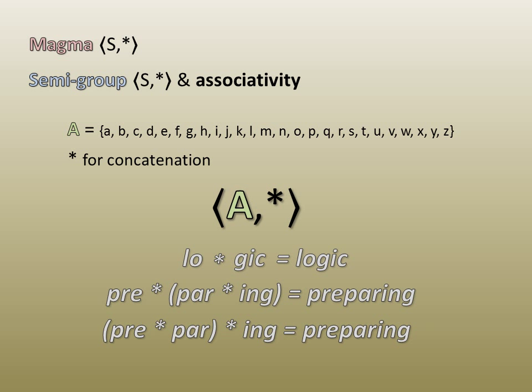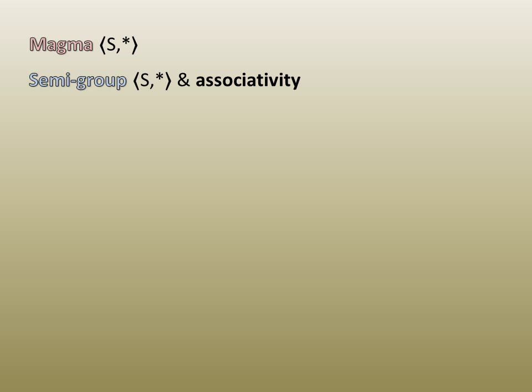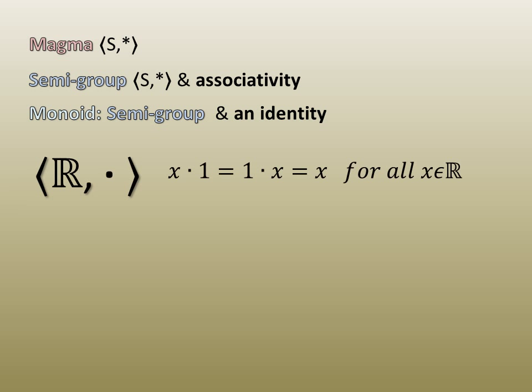You can now be more specific and call the magma a semi-group as it has associativity. Now we consider semi-groups with an identity element called monoids. An identity element leaves every other element, including the identity element itself, unchanged under a binary operation. Some immediate examples would be 1 in ordinary multiplication and 0 in ordinary addition.